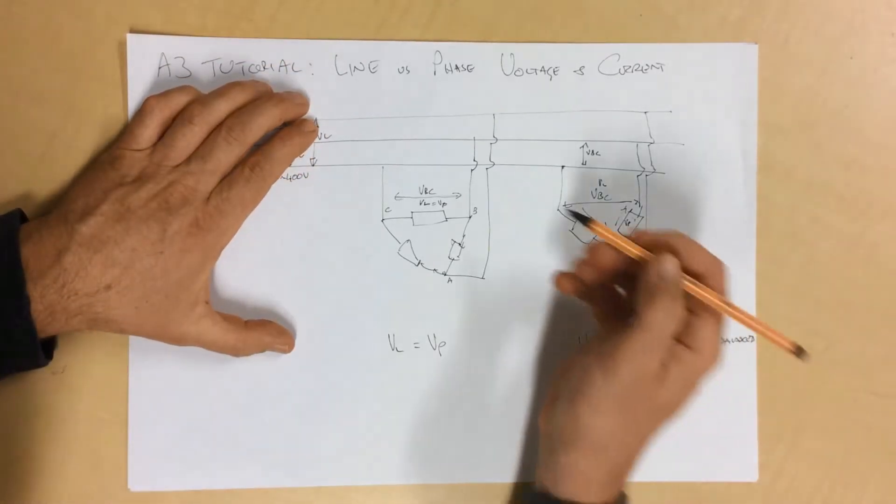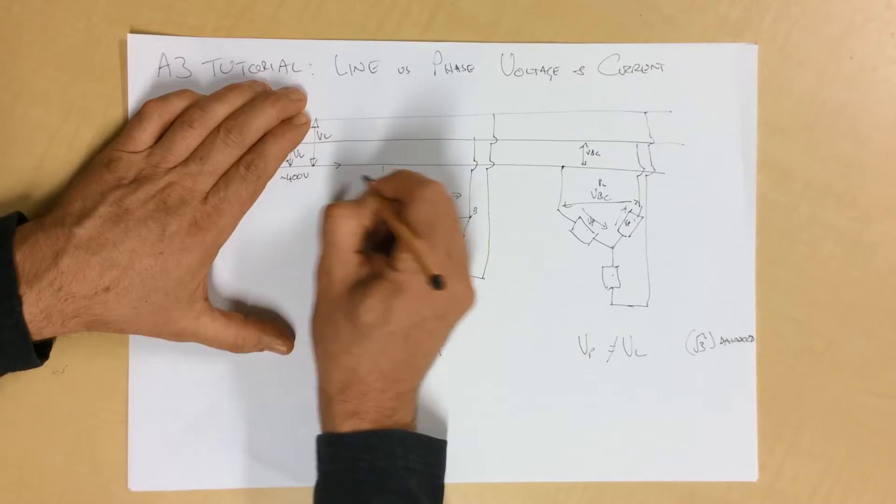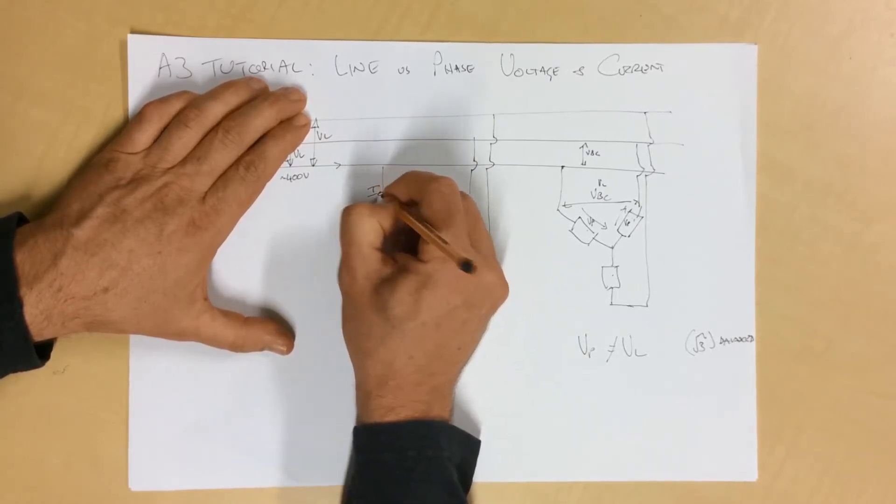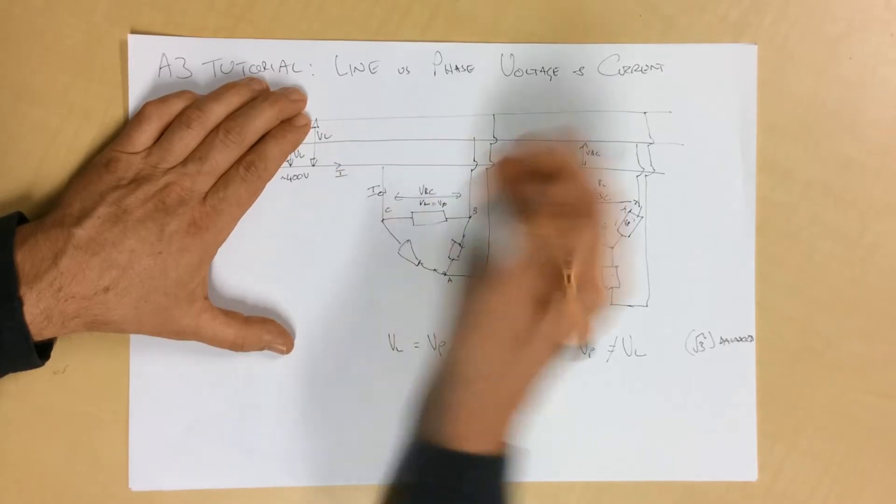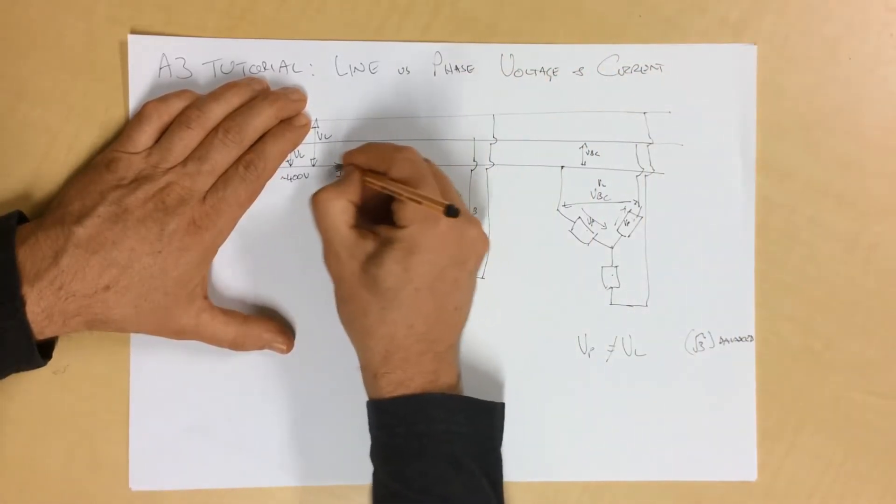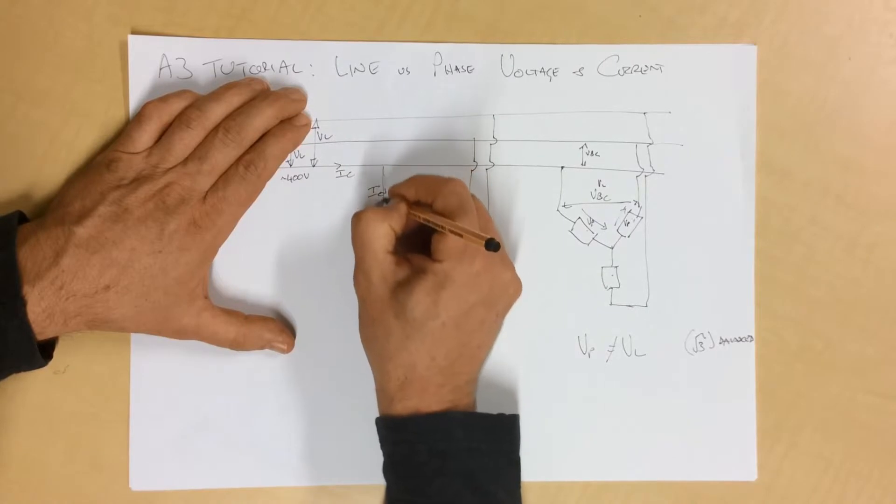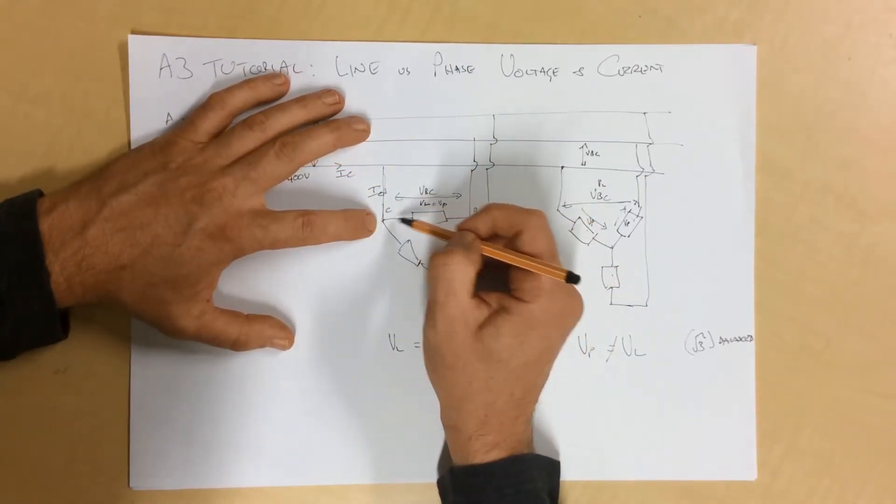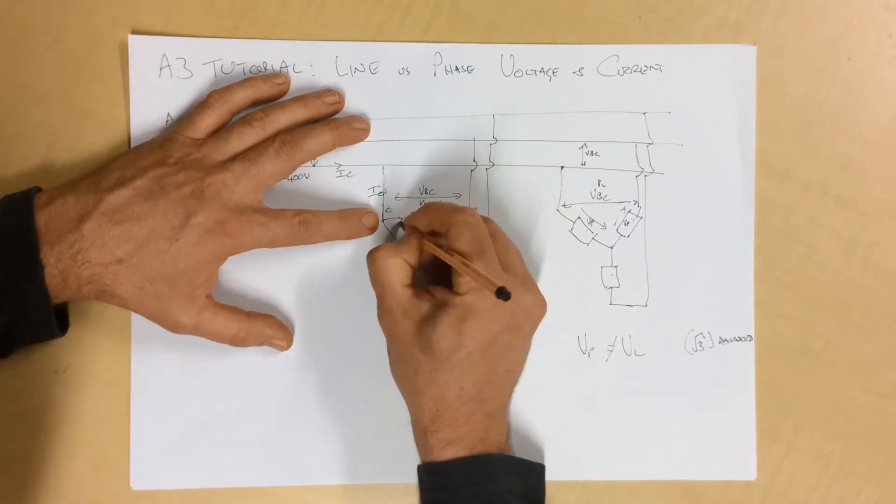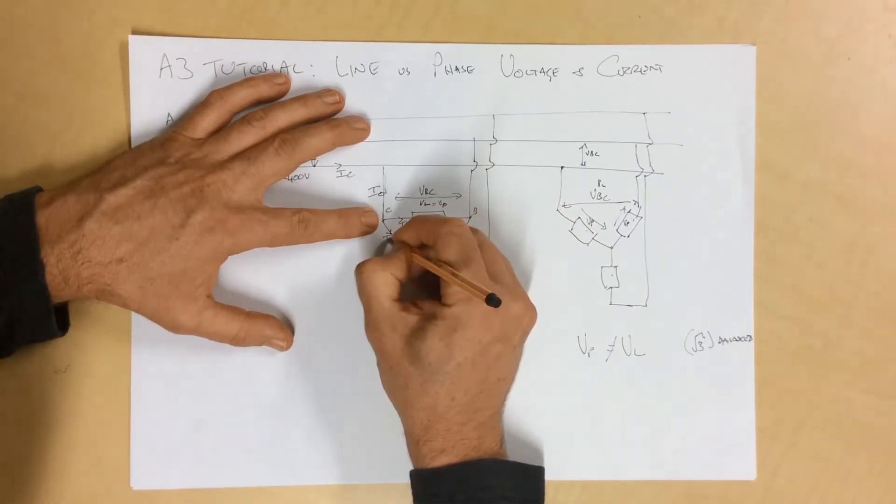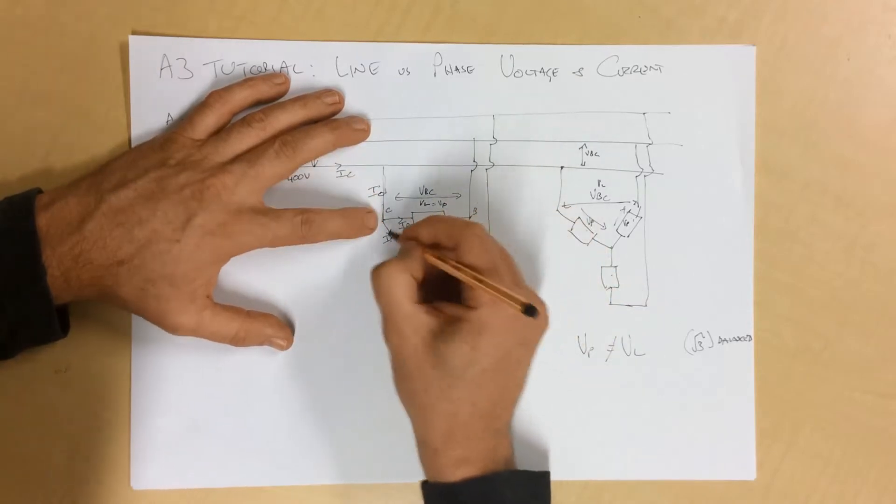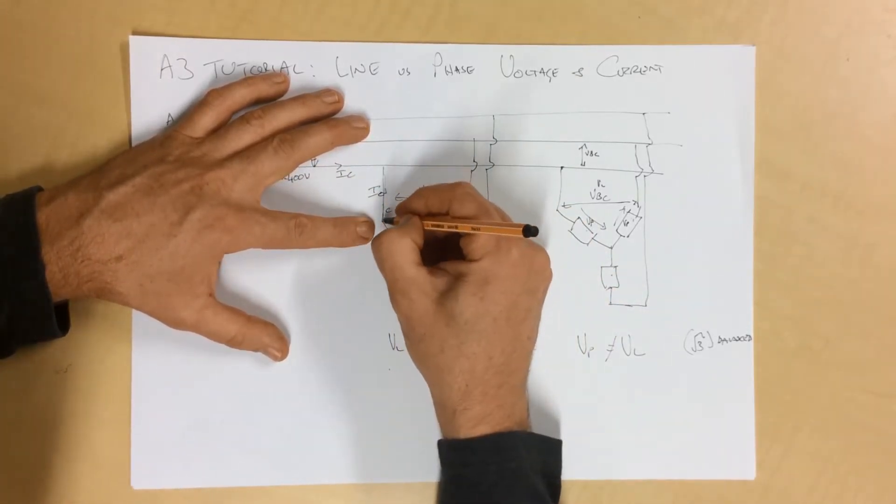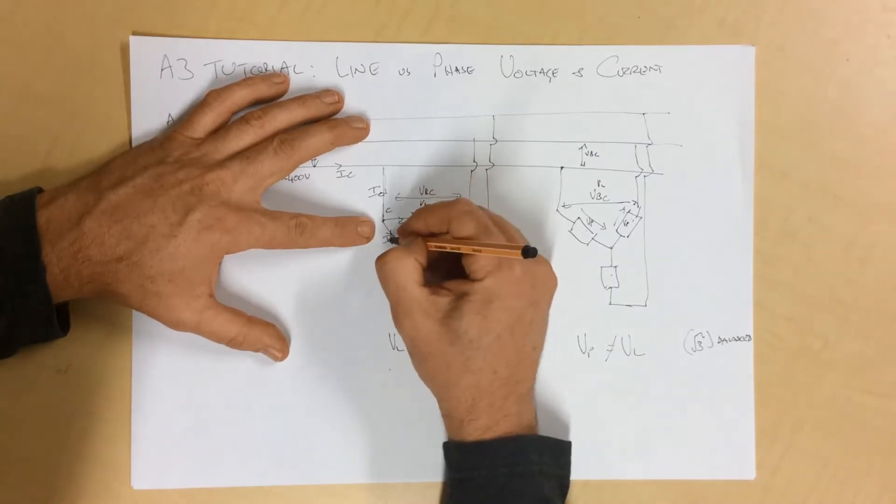If we come back a second and we look at the currents, we can see that the current flowing through here, this current here gets to this point and is split between here. So, this is our phase current, and this is another phase current. We can call it A or B or whatever, but we can see here that the line current flowing through here is not the same as either of these.